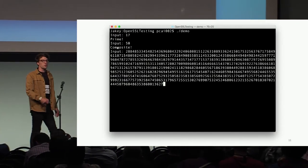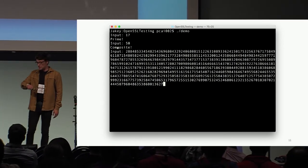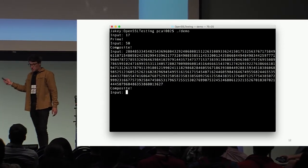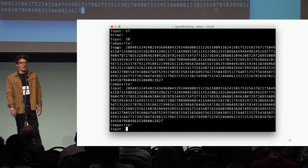Another quick demo. This time we have a 2048-bit number, this big one, and we're going to run it a couple of times to see how it measures up. First, OpenSSL correctly declares it composite. Nice one. Running the same number again, and it's composite.